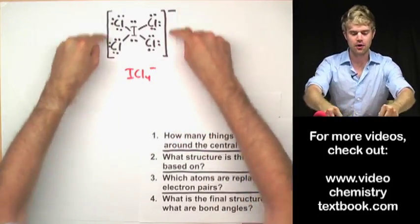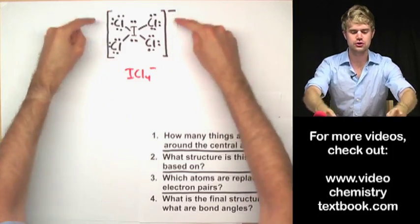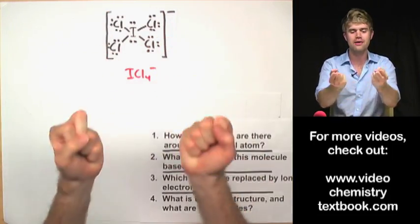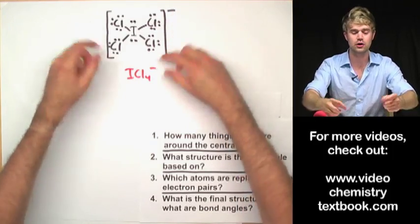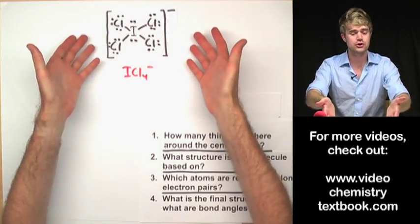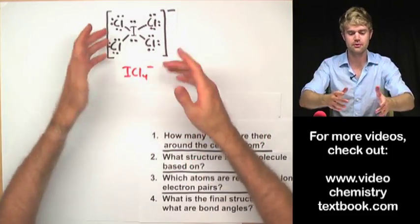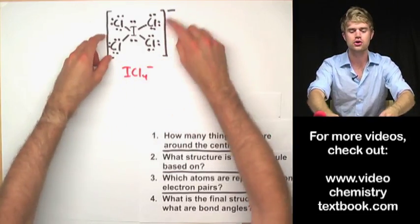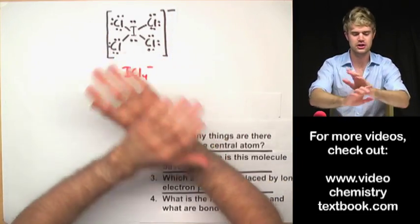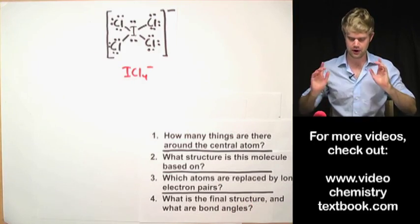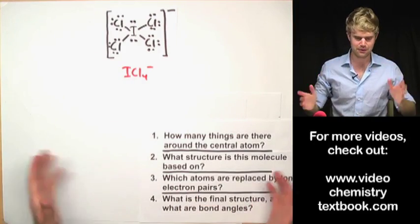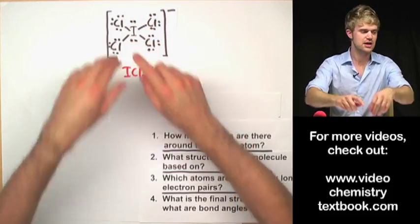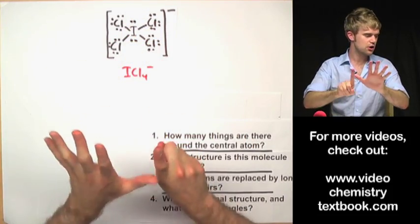ICl4⁻ — the brackets with a negative charge just mean the whole clump of atoms has received an extra electron. It doesn't matter if it has a charge or not; we go through VSEPR exactly the same way. Don't be thrown off by the charge — it has no effect on the VSEPR shape. First: how many things are around the central atom? There are six total things.